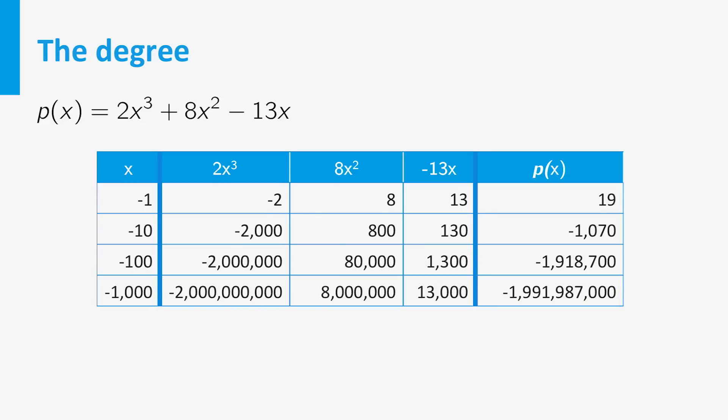In a similar way, when x becomes much smaller than zero, the relative difference between p(x) and 2x cubed also becomes very small.